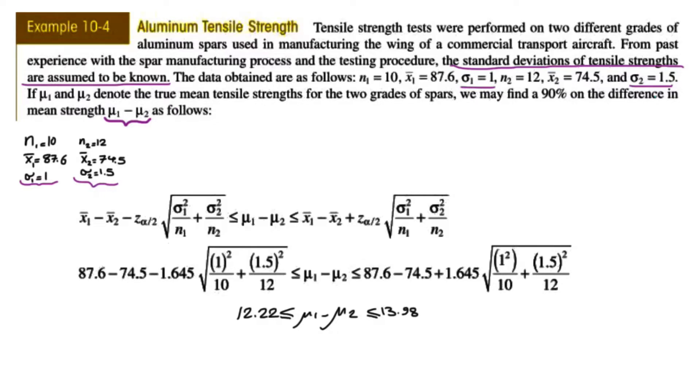So that was the lower bound, and upper bound was the same term, except that this negative turns into a positive. So you have all the information, you plug it into this equation, and you calculate the μ1 minus μ2 90% confidence interval.